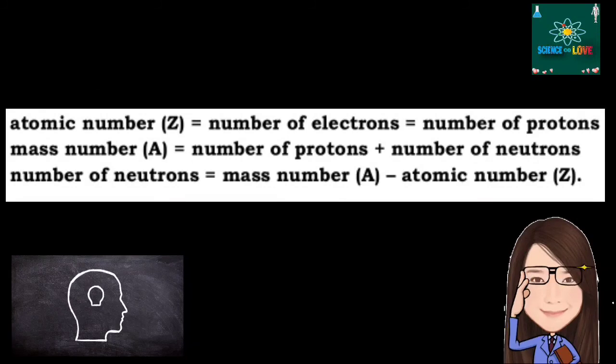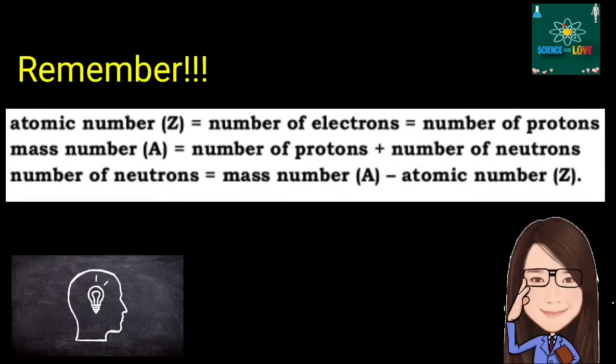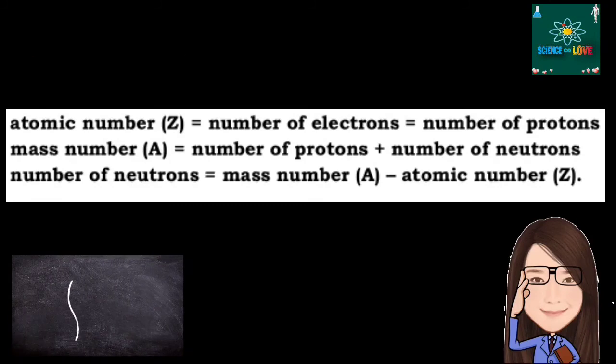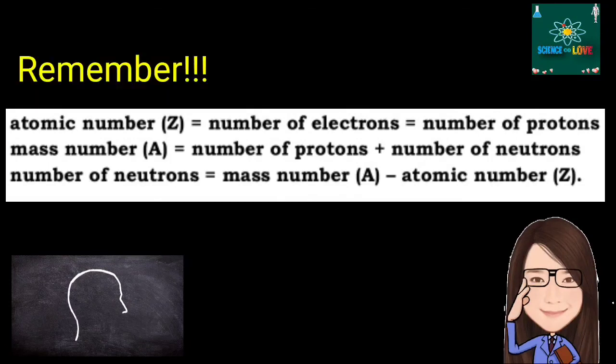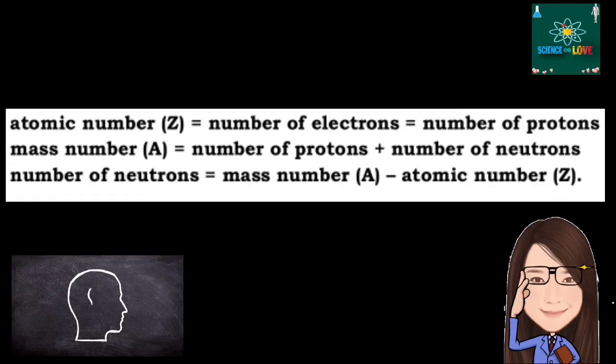Okay? Mass number with the symbol A is equal to the number of protons plus number of neutrons. And the number of neutrons is equal to mass number minus atomic number.